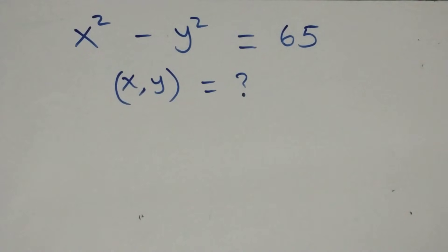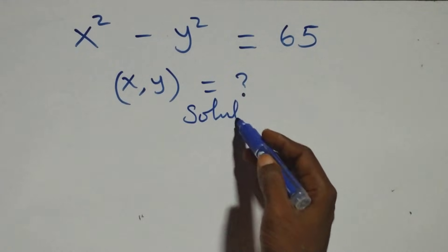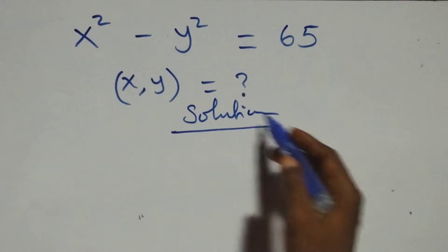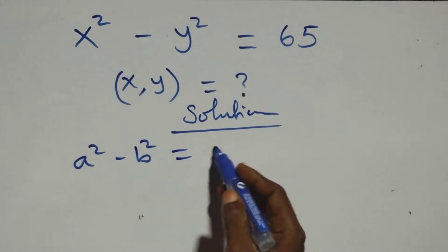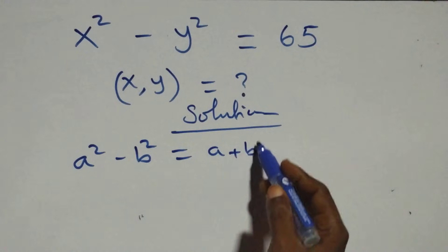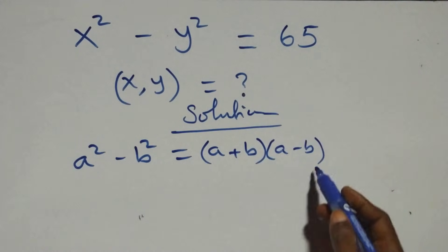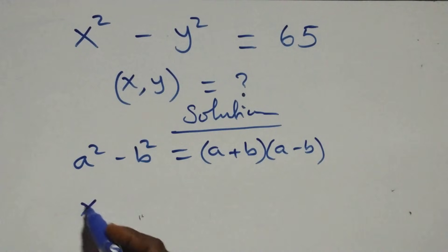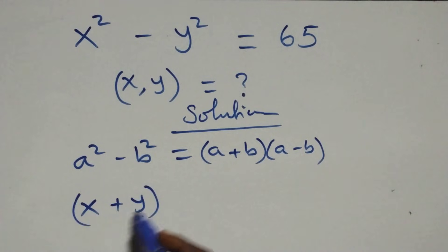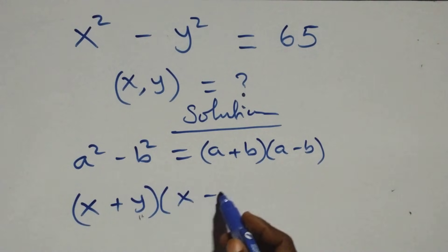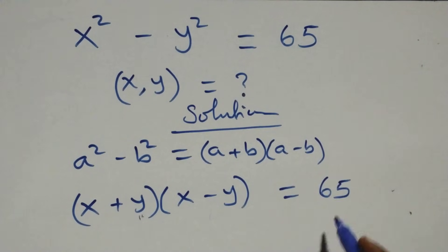Hello, you're welcome. Here we solve a nice algebra equation. We have a² minus b², which we express as (a+b)(a-b). Applying this, we get (x+y)(x-y) equals 65.